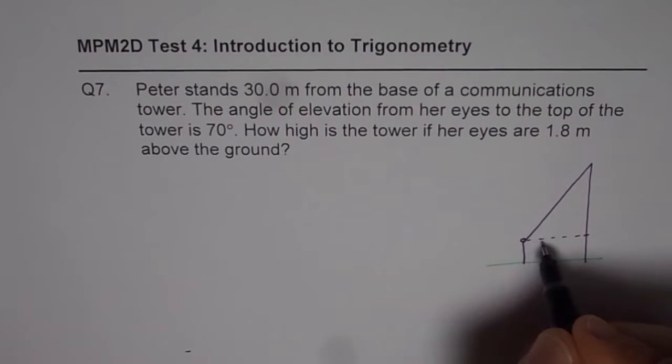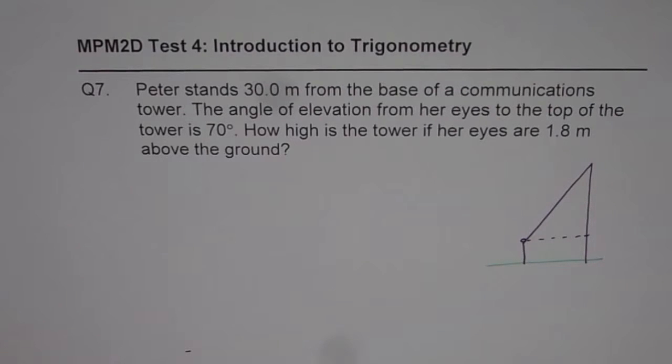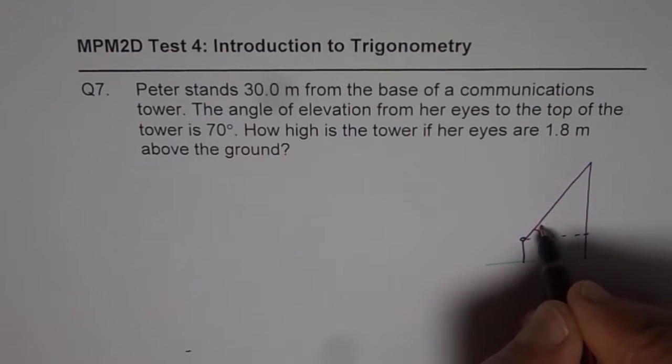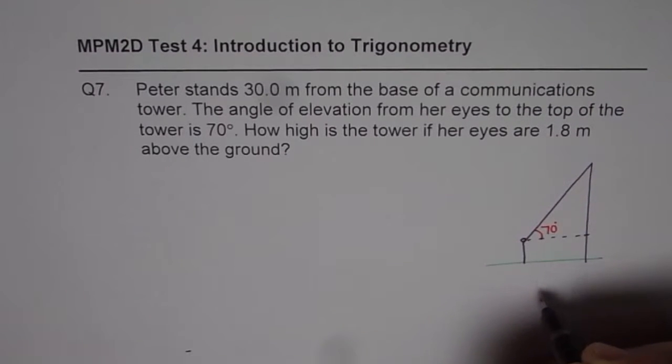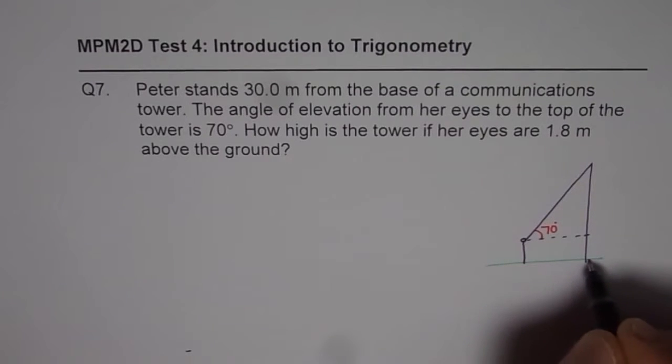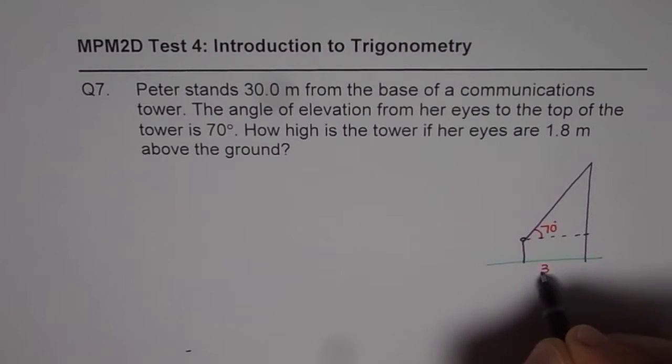So the angle of elevation is always with the horizontal. So what we are given here is basically that this angle here is 70 degrees. That is the eye level. Now the distance of Peter from the base is 30 meters. Let me write 30 meters here. So that is the distance between these two points.